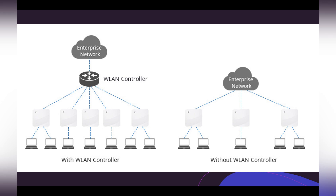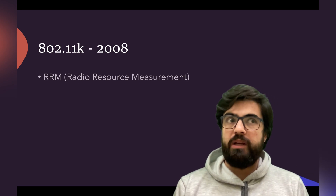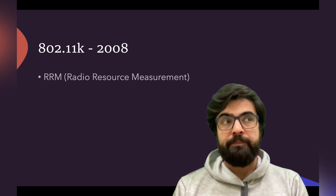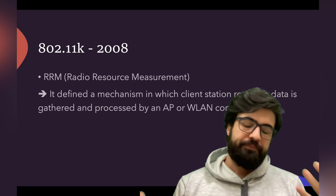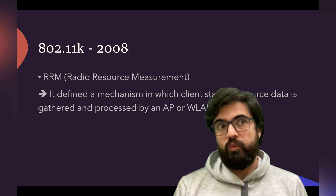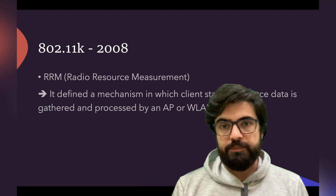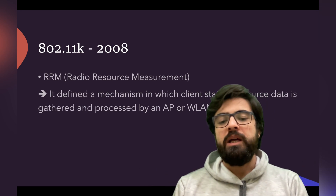But what information does the WLAN controller gather, and what are the benefits? During this video we'll look at 802.11k, the amendment related to RRM — Radio Resource Measurement. This amendment is essentially about how a WLC, or Wireless LAN Controller, gathers certain types of data to manage the network.